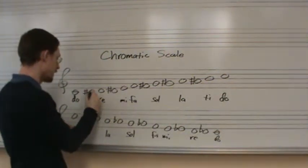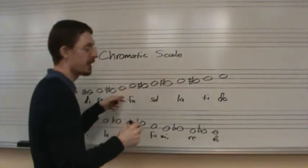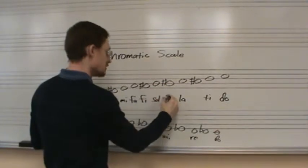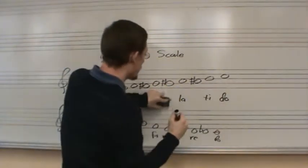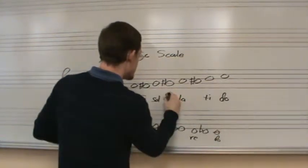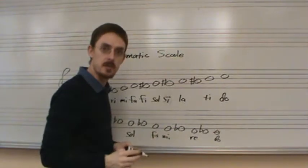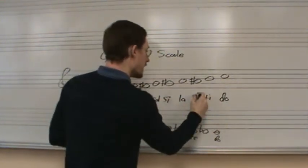So DO will become DI, RE will become RI, MI is already a half step from FA, so we don't worry about that. FA will become FI, SO will become SI, which is why, in case you were wondering why we say TI for the leading tone instead of SI, as they do in some systems, because this is SI. LA becomes LI, then TI and DO.